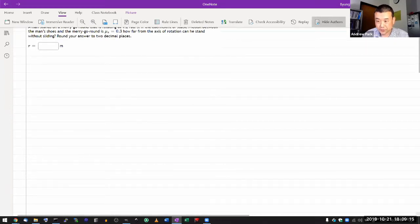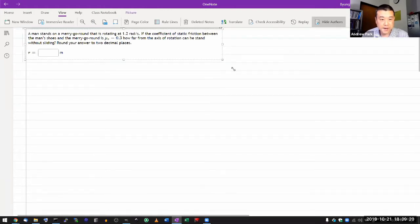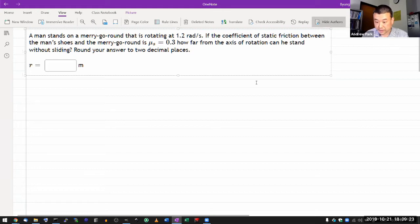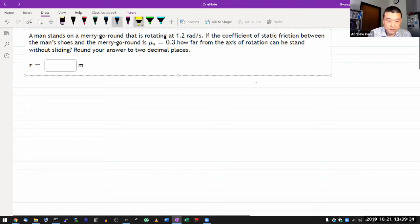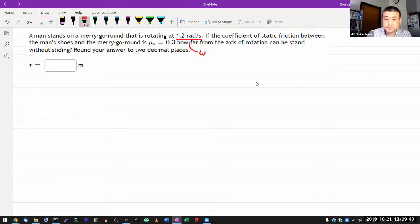Let's start from the very first question without wasting any time. It says a man stands on a merry-go-round that is rotating. A merry-go-round that is rotating at some angular momentum. Let me write that down. So this is giving you the angular momentum, angular velocity. If the coefficient of static friction between the man's shoes and the merry-go-round is some friction coefficient, how far from the axis of rotation can you stand without sliding?